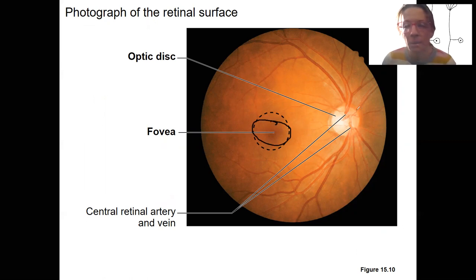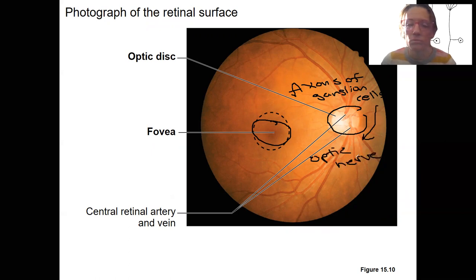And then the optic disc, that is what the axons of the ganglion cells that have become the optic nerve to carry this information to the brain. This is a location where there's no photoreceptors. So it's called a blind spot.